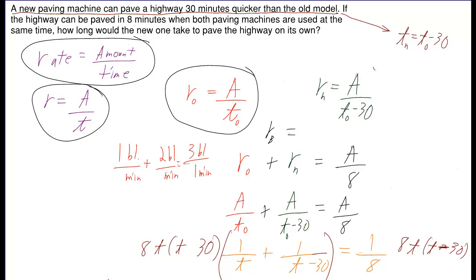What about for the new? Well, this is what it looks like when you use new stuff. But I didn't use TN. I just went ahead straight ahead and substituted TO minus 30.